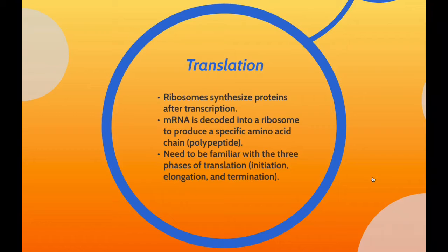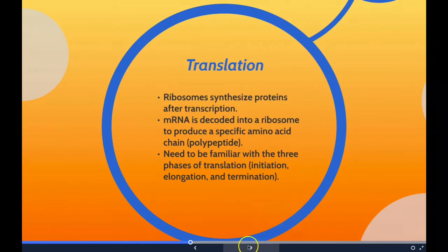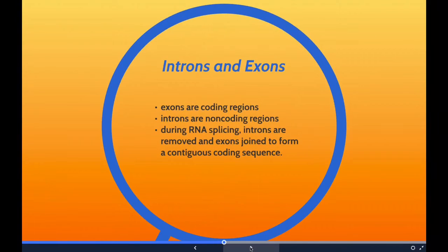The transfer RNAs carry specific amino acids that are chained together into a polypeptide as the messenger RNA passes through and is read by the ribosome. There are three phases of translation: initiation, elongation, and termination. During initiation, the ribosome assembles around the target messenger RNA and the first transfer RNA is attached at the start codon. During elongation, the transfer RNA transfers an amino acid corresponding to the next codon, and the ribosome moves to the next messenger RNA codon, creating an amino acid chain.